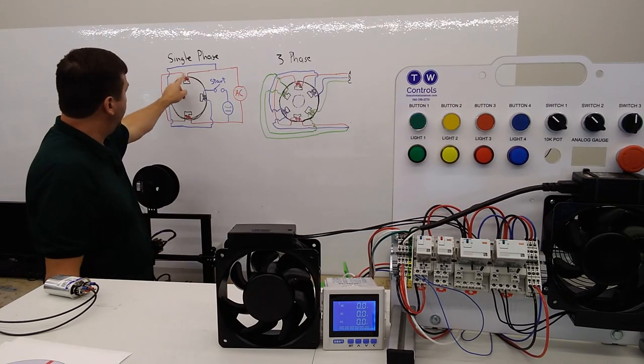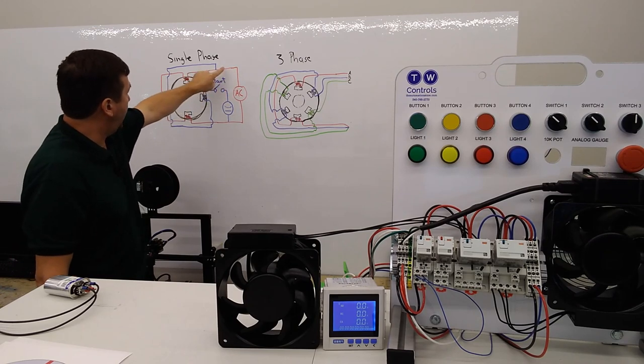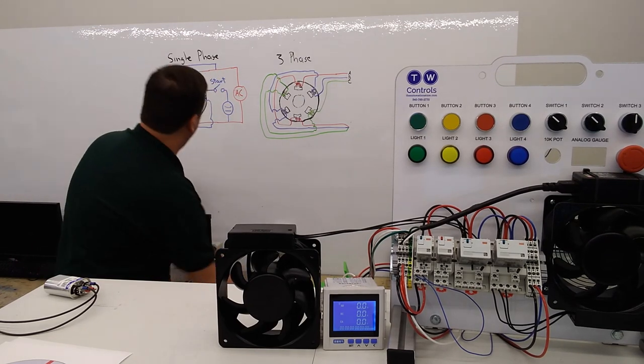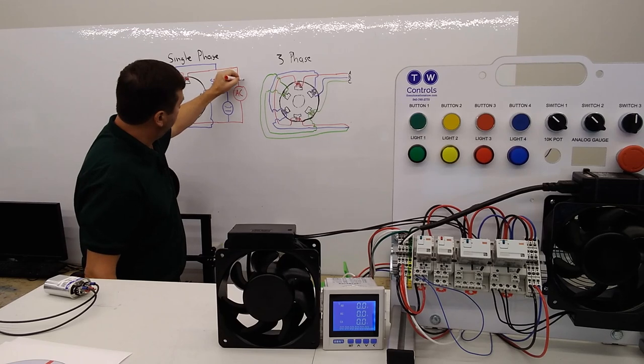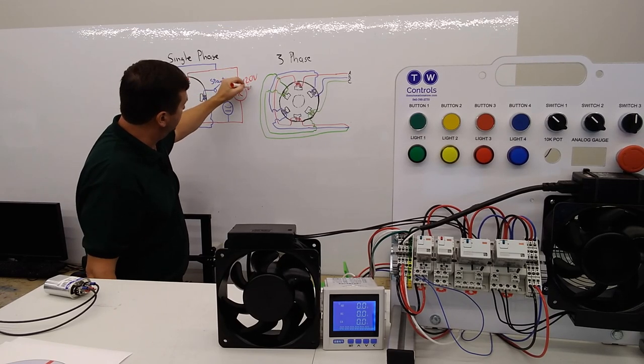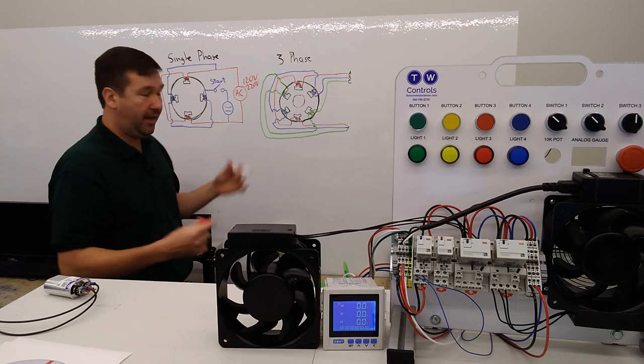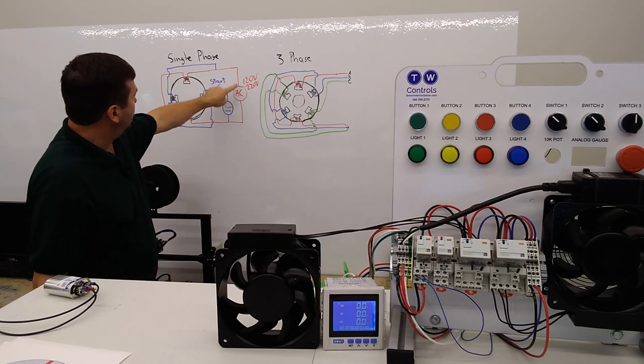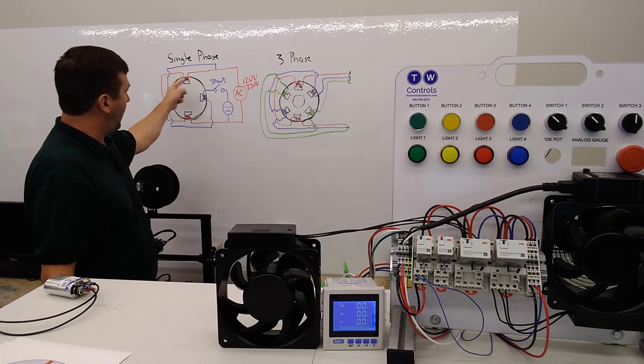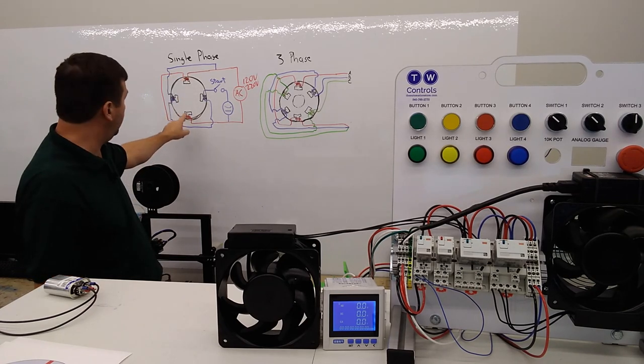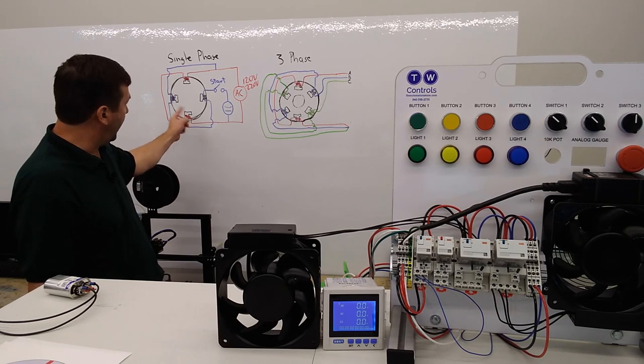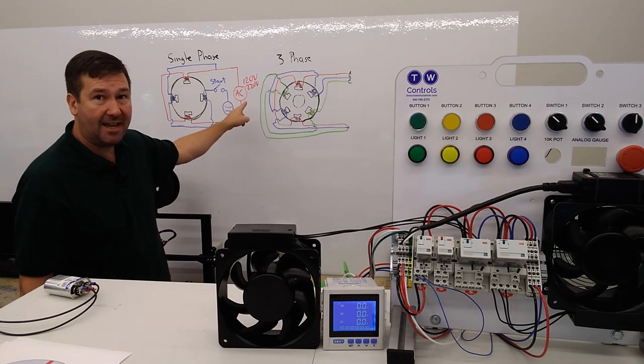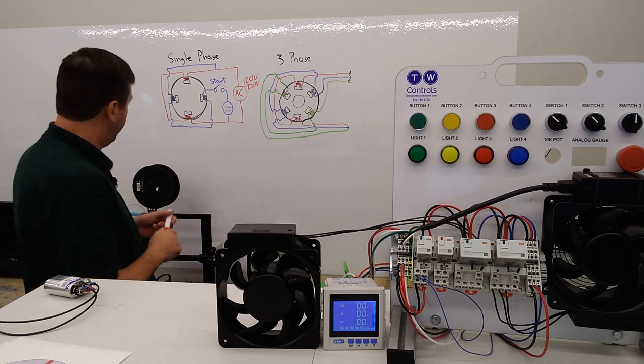So you have your run winding on this, and so that gets AC power. Now this could be 120 volt, or it could be 220 volt, at least here in the U.S.—that's your two most common voltages. But it'll take power and it goes around one of those windings, then it goes to a winding 180 degrees across from it and wraps around again, and then comes back to the AC. And that is your run circuit.